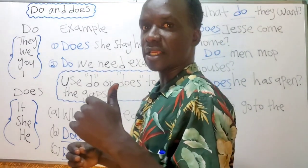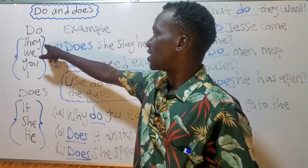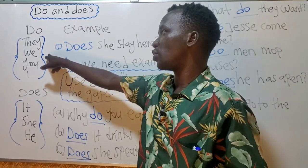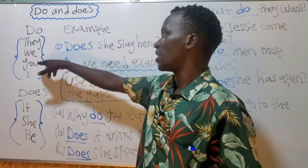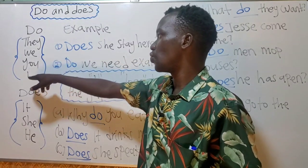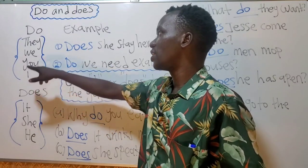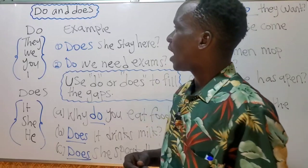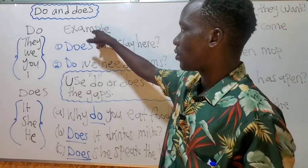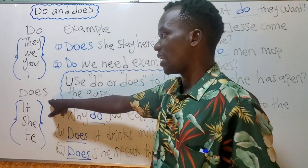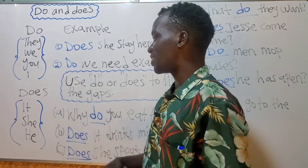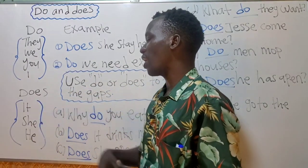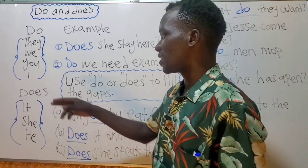When you are using 'they,' 'we' — especially plural — 'they' is plural and 'we' is plural. These are plural pronouns and you use 'do' with them. Now let us come to 'does.' 'Does' is especially used with singular pronouns.